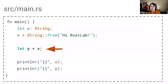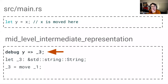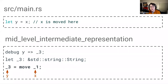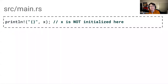Now let's look at the line where we attempt to create the variable y and assign it to the value of x. This is where the value of x is moved to y. If we look at the MIR created for this line, we see that y is assigned to local underscore three — remember, a local represents a place in memory. Underscore three is given the type string, and then the value at underscore one (which represents x) is moved to the value of underscore three (which represents y). When we get to the next line and try to print out x after we've moved the value of x into y, x is not initialized at this line, so we cannot print it. And that's what generates this particular error.